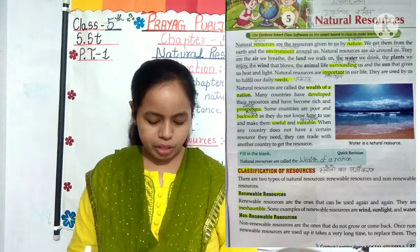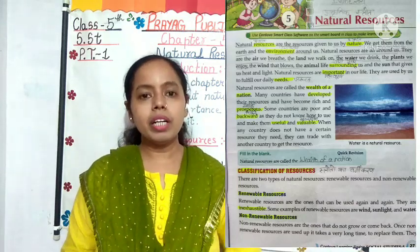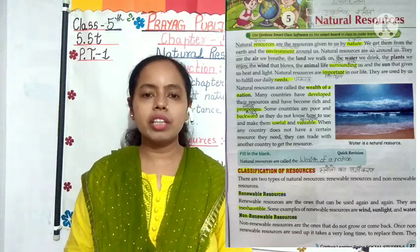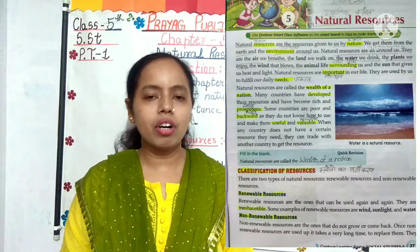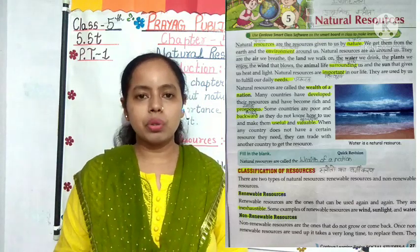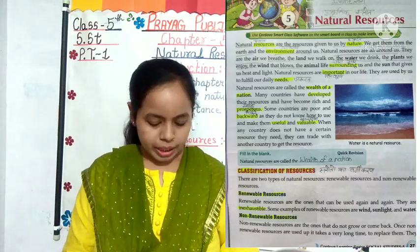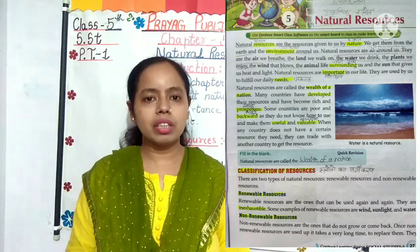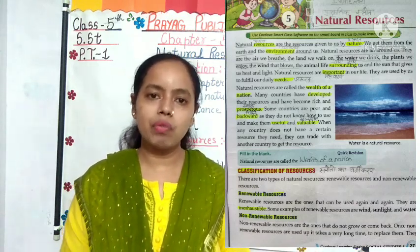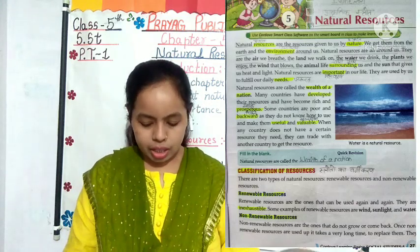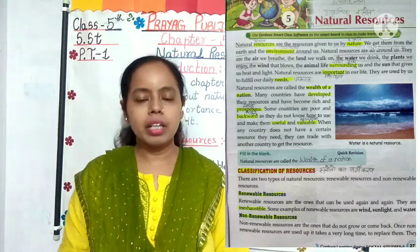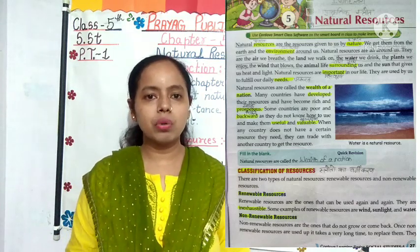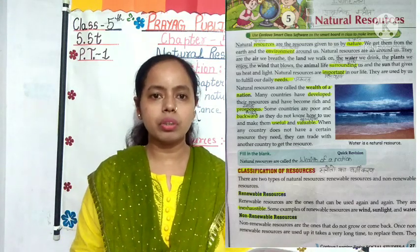Now let's know about the classification of resources. How do we classify these resources? Please underline 'Classification of Resources' and write: resources or Shroton ka Vargikaran. There are two types of natural resources — renewable and non-renewable. So natural resources are of two types: Renewable Natural Resources and Non-Renewable Natural Resources.